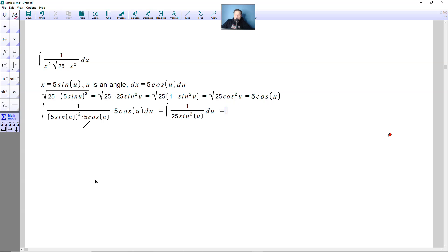Continuing from here, it's going to be the integral. I'm going to put that 25 outside. So 1 over 25th. And then 1 over sine squared of u, you can write instead as cosecant squared of u this way. With the du over here.